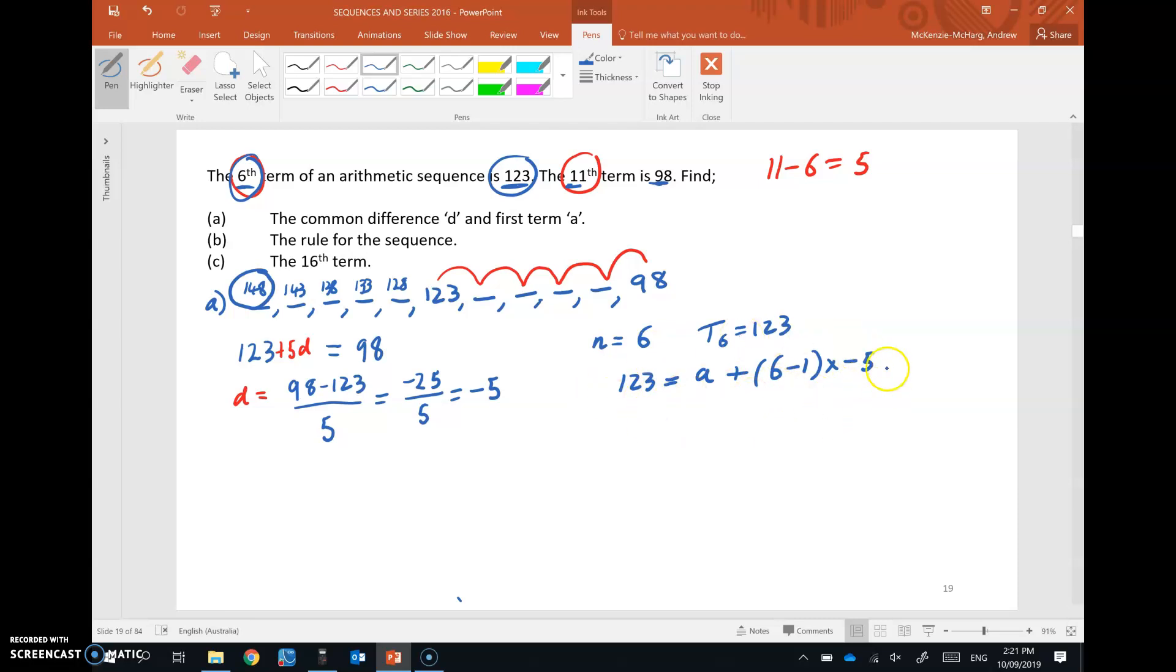So I'm just putting the actual term in and the number of the term with the common difference. Now, it's a matter of rearranging this to get A on its own. You might want to pause the video and try that, then I'll have a go at it. Okay, so I'll do it now. A plus, okay, 6 take 1 is 5, by negative 5 gives negative 25. And then that negative 25 goes over, and 123 plus 25 becomes a plus, is A, which is that 148.